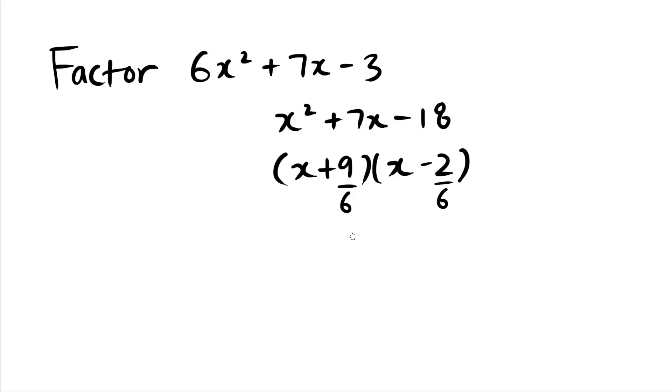And then we simplify. So this becomes x plus, divide top and bottom by 3, we get 3 over 2, x minus 1 third.